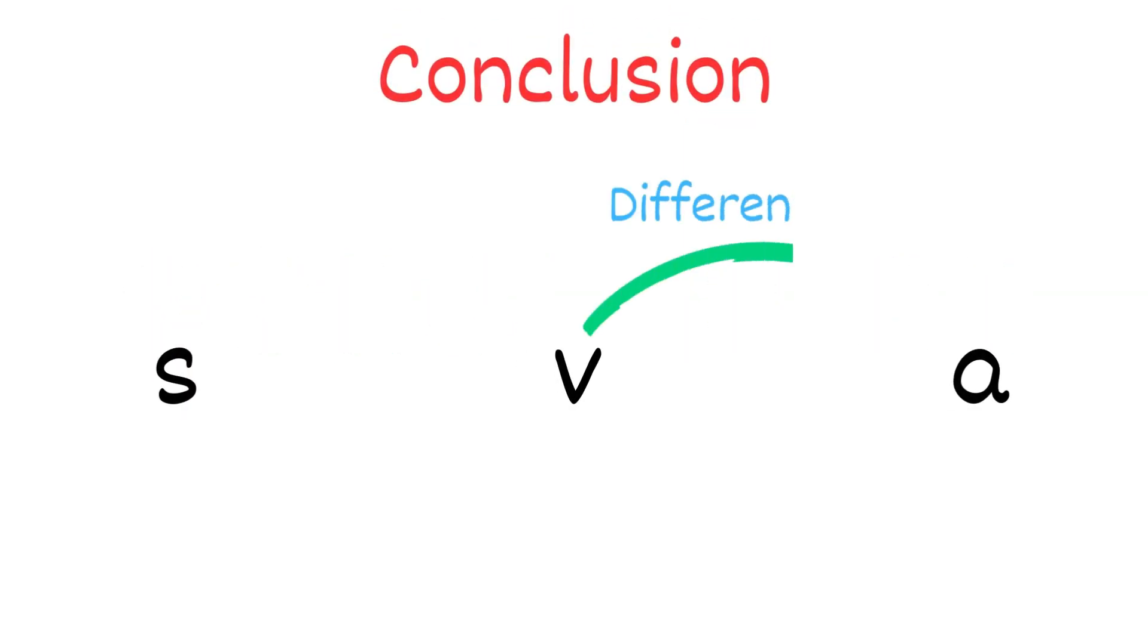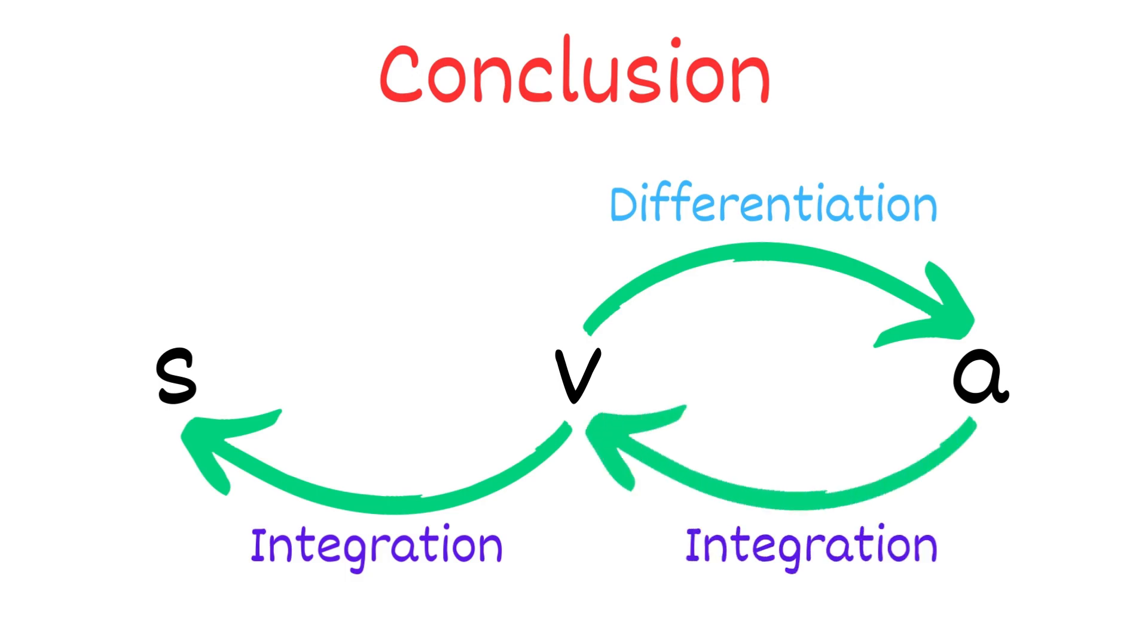In conclusion, differentiating velocity gives us acceleration, while integrating velocity gives us displacement. And if we integrate acceleration, we get back velocity. Likewise, differentiating displacement will also give us back velocity.